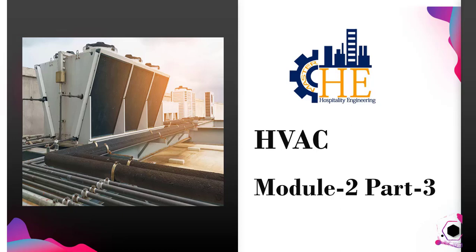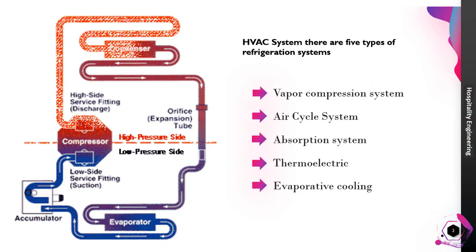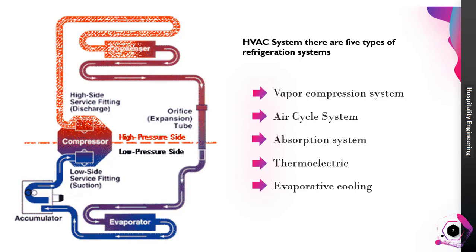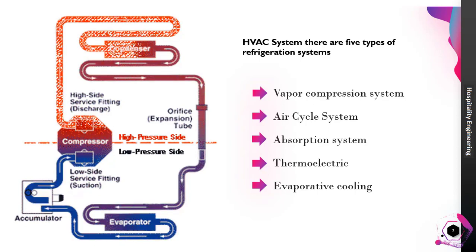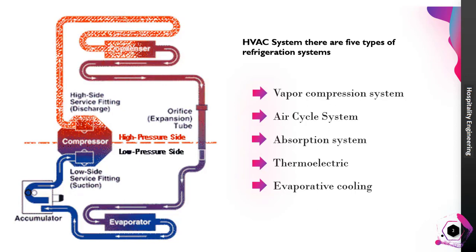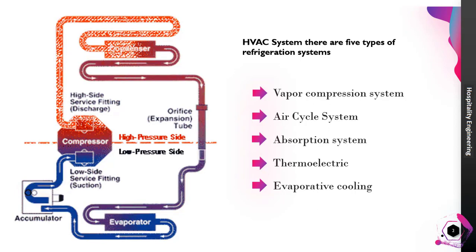Good morning to all of you. Welcome back to Hospitality Engineering, HVAC Module 2, Part 3. In the last video, we saw the HVAC system mainly on the Vapor Compressor System. In an HVAC system, there are five types of refrigeration systems available: Vapor Compressor System, Air Cycle System, Absorption System, Thermoelectric, and Evaporative Cooling System. Here, we will go through the Vapor Compressor System again.